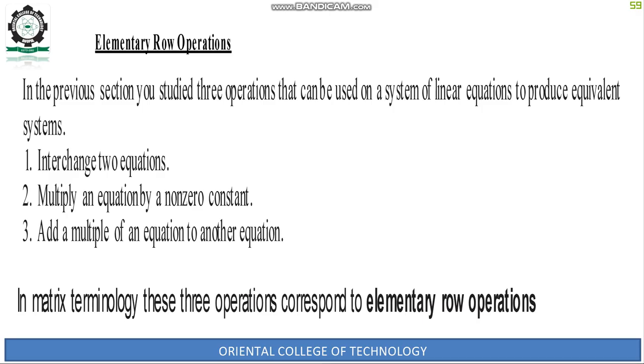Elementary row operations: In the previous section you studied three operations that can be used on a system of linear equations to produce equivalent systems. First, interchanging two equations. Second, multiply an equation by a non-zero constant. Third, add a multiple of one equation to another.